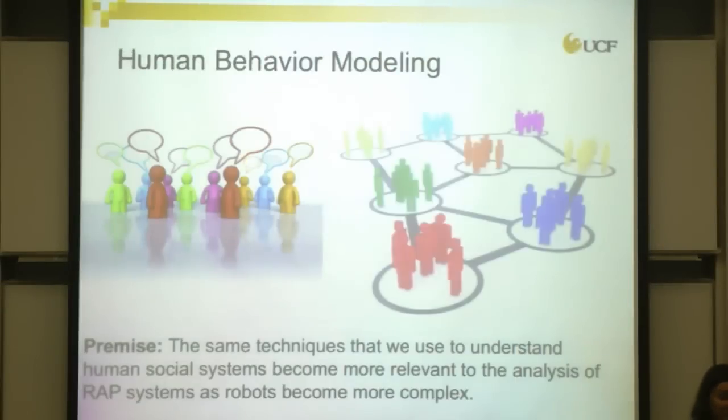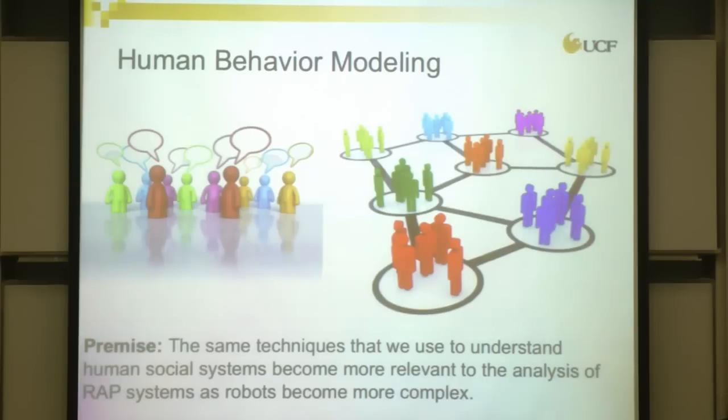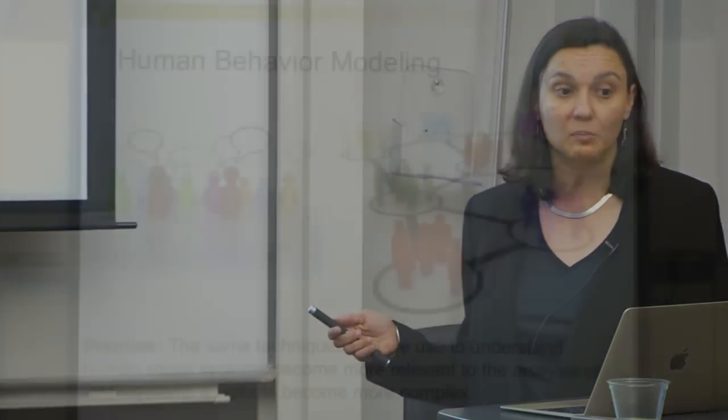How do we model it? How do we debug it? The idea I'm proposing is the premise that the same techniques we use to understand human social systems become more relevant to the analysis of RAP systems as those systems become more complex. In the Robotics Institute, there's a lot of energy devoted to making systems that approximate humans in many ways — physically but also cognitively. As we move toward that future, this is going to be increasingly important.